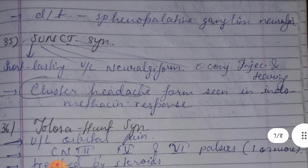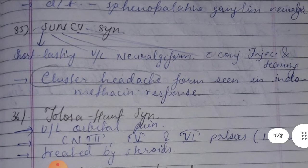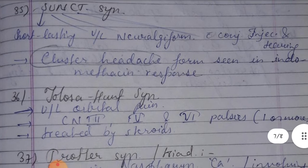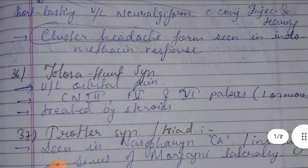Thirty-fifth is SUNCT syndrome — Short-lasting Unilateral Neuralgiform headache attacks with Conjunctival injection and Tearing. This is a cluster headache form which responds to indomethacin.